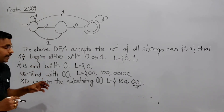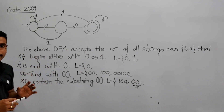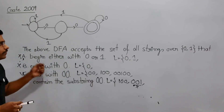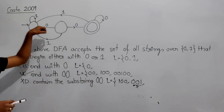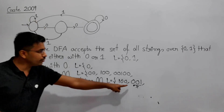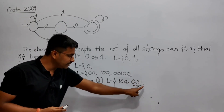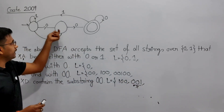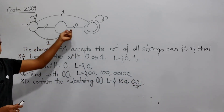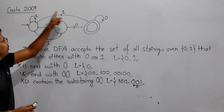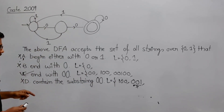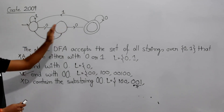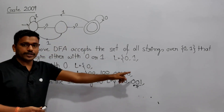So option C is the correct answer. They will give the options in such a way that all options look correct, but you have to find some string for which it gets rejected. '001' contains the substring '00' but gets rejected, eliminating option D. Option C — strings ending with '00' — is the correct language for this DFA.